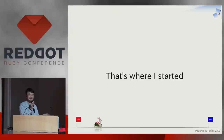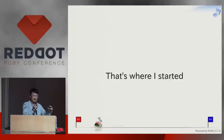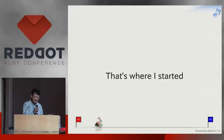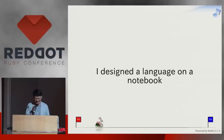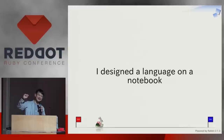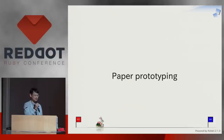That is where I started, at high school age. But back then there was no open source, no internet — I could only learn through books, and I only had this tiny computer with only 400 lines of code. I had no knowledge, no skills, no real computers. So I designed a language on a paper notebook. I wrote programs in my ideal programming language without any compiler, interpreter, or virtual machine. I call it the paper prototyping of a programming language.